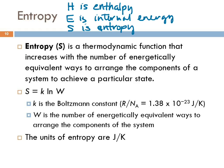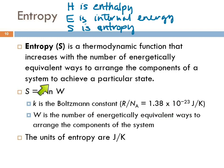Entropy is a thermodynamic function that increases with the number of energetically equivalent ways to arrange the components of a system to achieve a particular state. Here's an equation for entropy: entropy equals a constant K — which is called the Boltzmann constant — times the natural log of W. The Boltzmann constant is the ideal gas constant divided by Avogadro's number, coming out to 1.38 × 10⁻²³ joules per Kelvin. W is the number of energetically equivalent ways to arrange the components of the system and has no unit, so the units of entropy are joules per Kelvin.